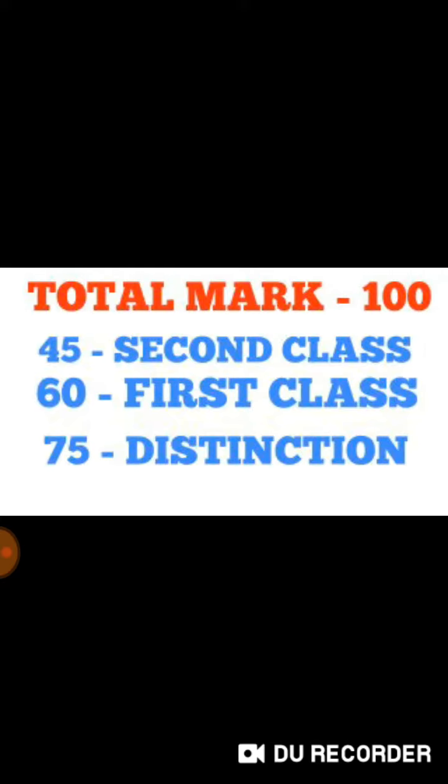The shorthand total mark for junior is 100. Junior is English or Tamil. If you score 45 to 59 out of 100, you can get a second class. If you score 60 to 74, you can get a first class. First class with distinction is 75 and above.